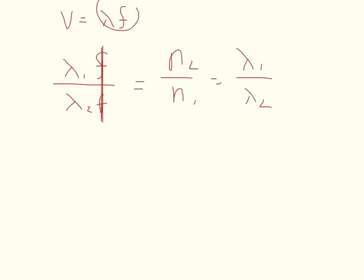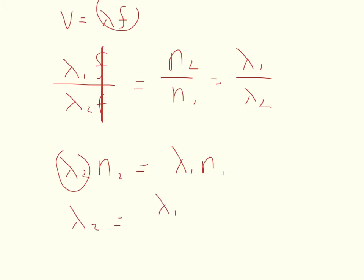In general, lambda 2 times N2 is equal to lambda 1 times N1 — that's the standard form of this equation. We're solving for lambda 2, so we divide to get lambda 2 equals lambda 1 times N1 over N2.